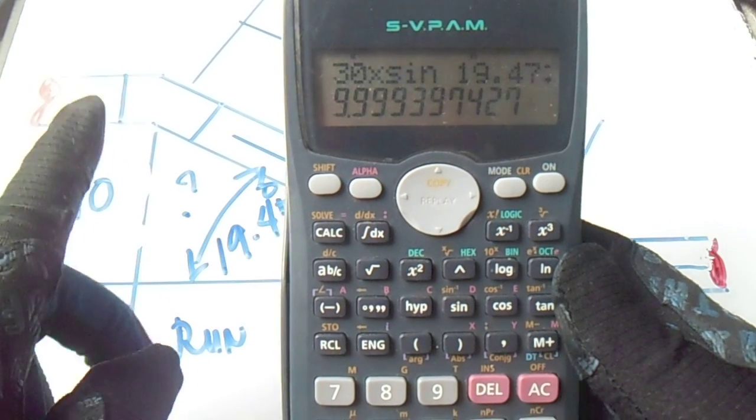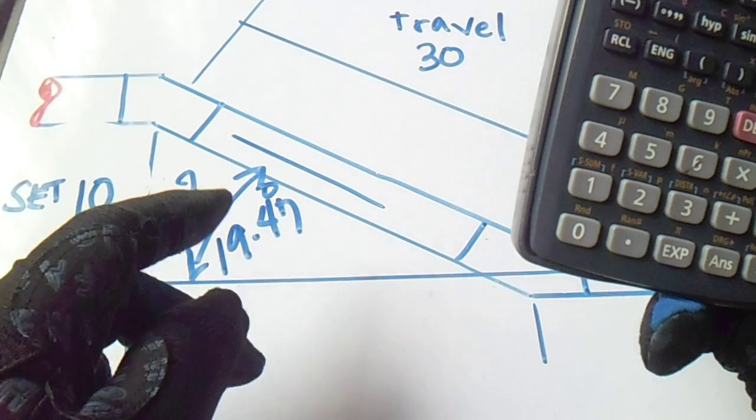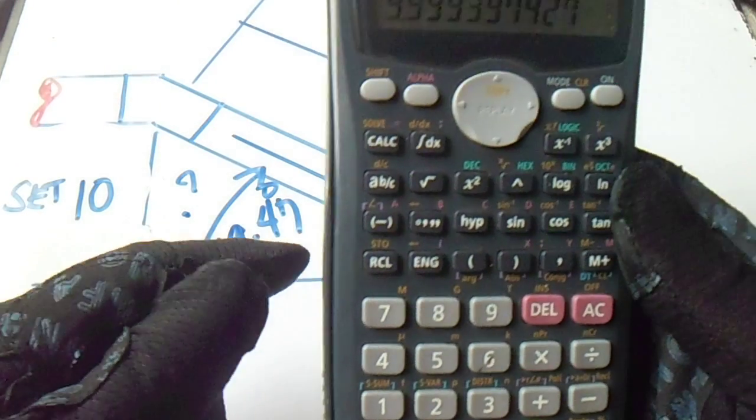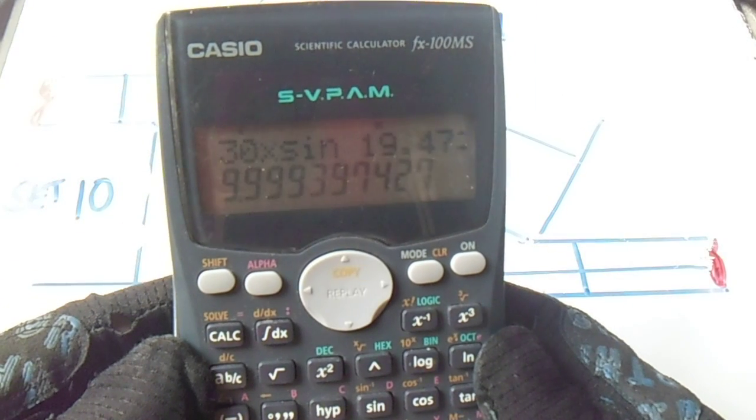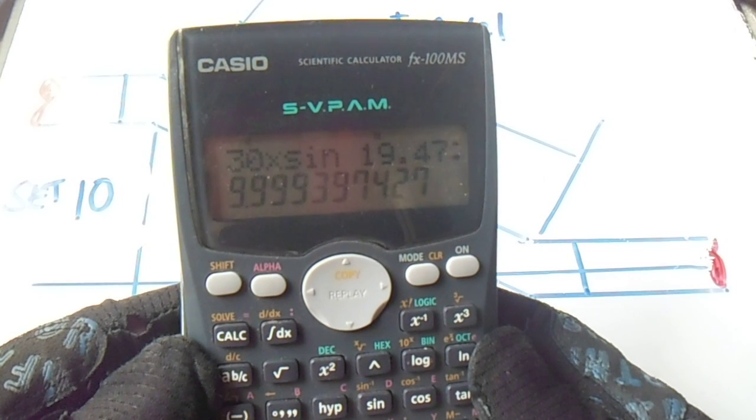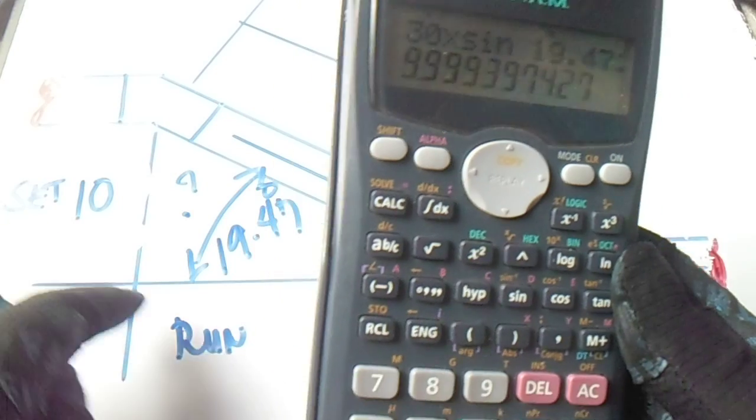We are trying to compute this to check if we are correct. I will compute it in degrees. So 30 multiplied by 19.47, the answer is 10.